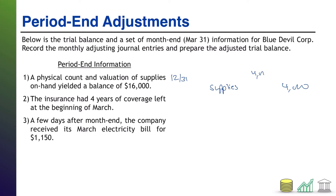And then we have to debit something $4,000. This is a situation where we have an asset that has been used up. And when that happens, that is basically a cost being incurred by the company because value has been lost. So that's an expense, and we just name it supplies expense.